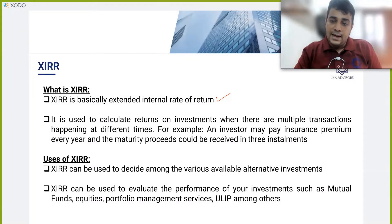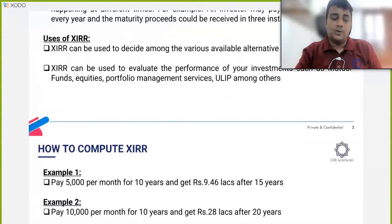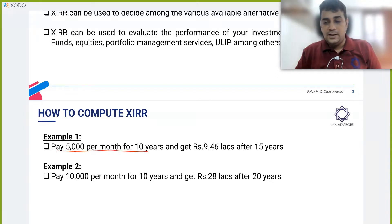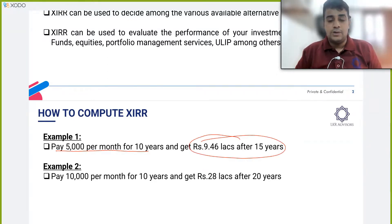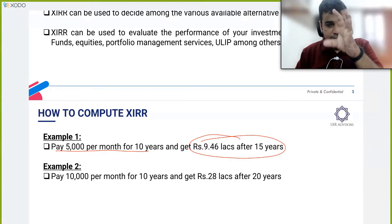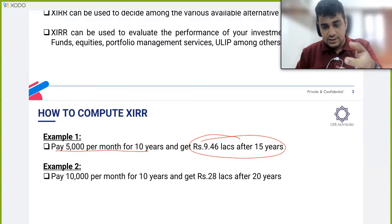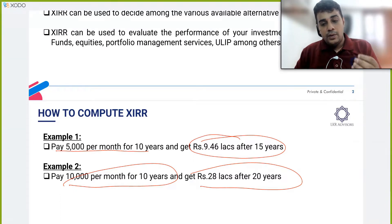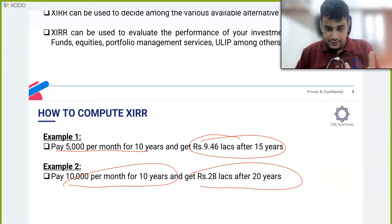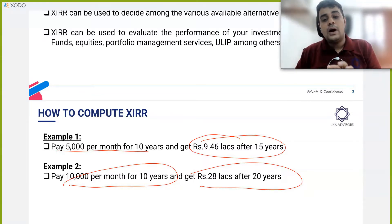Let me give you two examples. Option one: pay 5,000 per month for 10 years — that is 6 lakh rupees total — and get back 9,46,000 after 15 years. Option two: pay 10,000 per month for 10 years and get back 28 lakhs after 20 years. Many people may think this gives a very healthy return, but without calculating you are just doing guesswork. We will help you calculate this properly.